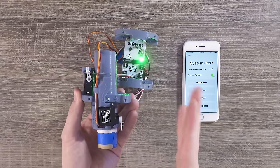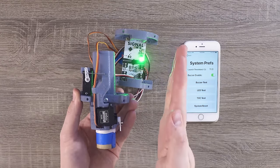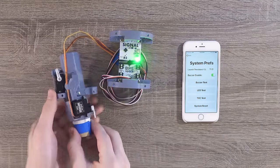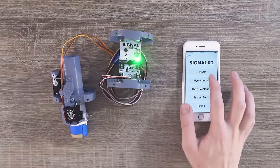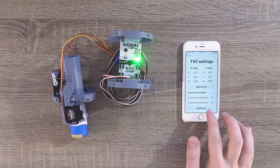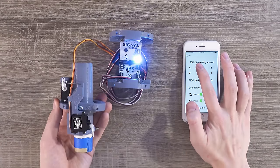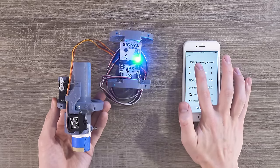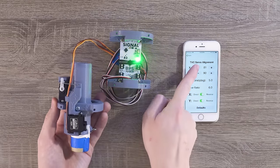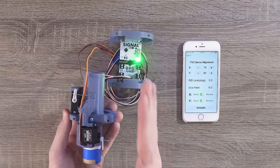In this TVC mount, the X axis is a little misaligned. Usually the motor should be straight up and down, but right now it's at an angle. We can fix this by going into thrust vectoring, tapping Advanced, and then using the TVC servo alignment buttons. Each time you push the plus or minus buttons in the app, you change the center point of the mount by a fraction of a degree.